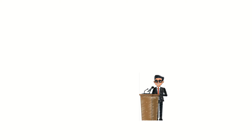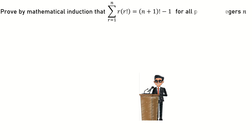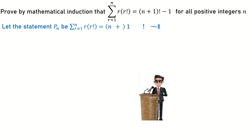Hi everyone. In this video we are going to be solving a problem which reads: prove by mathematical induction that the sum from r equals one to n of r times r factorial is equal to n plus one factorial minus one, for all positive integers n. First, I'm going to let the statement P(n) be the statement I am supposed to prove.